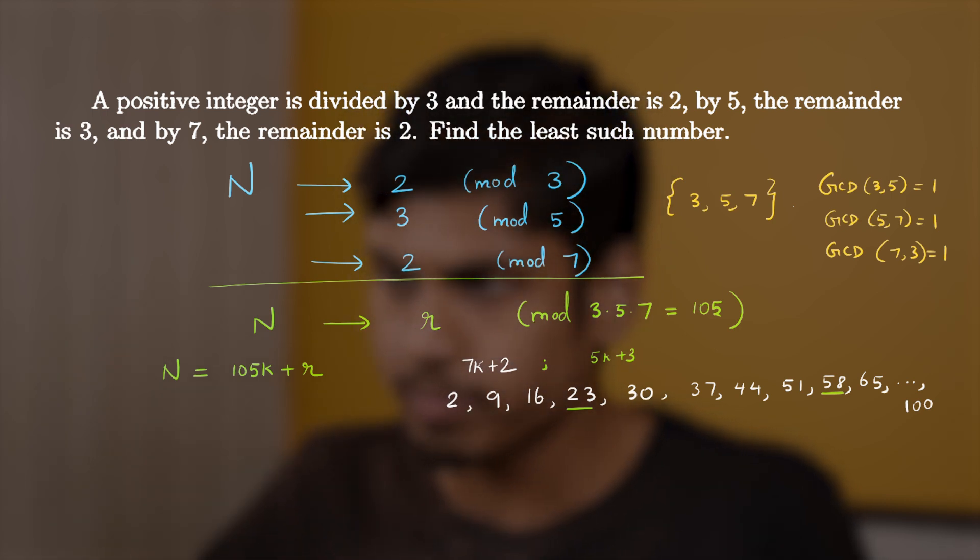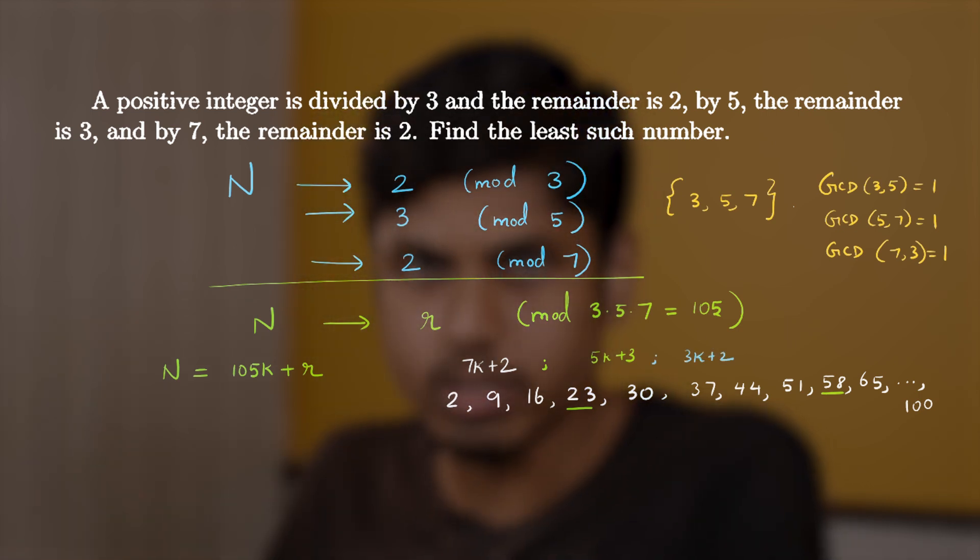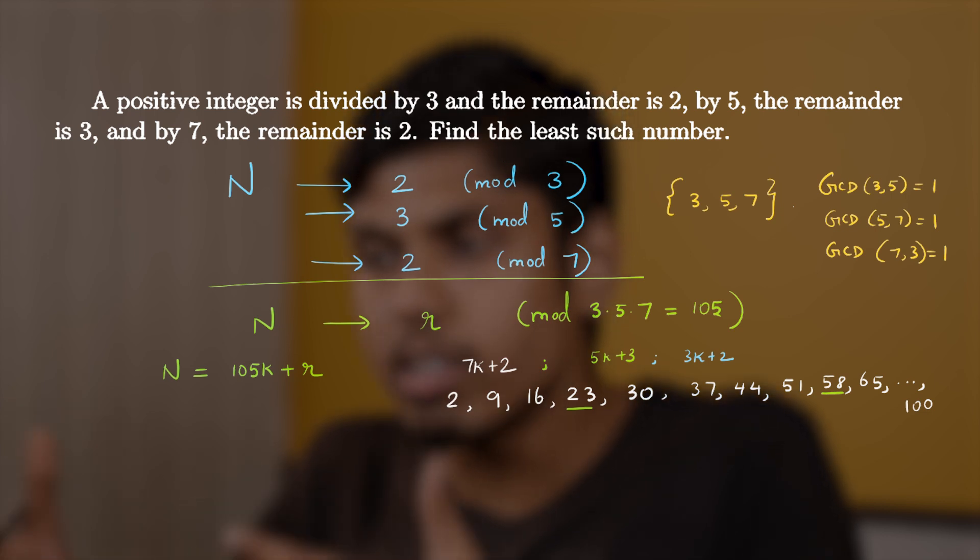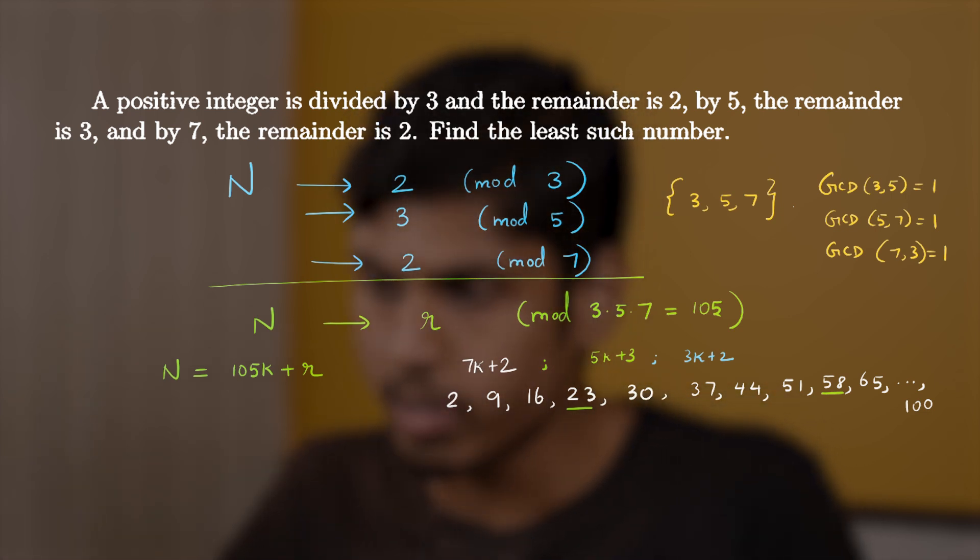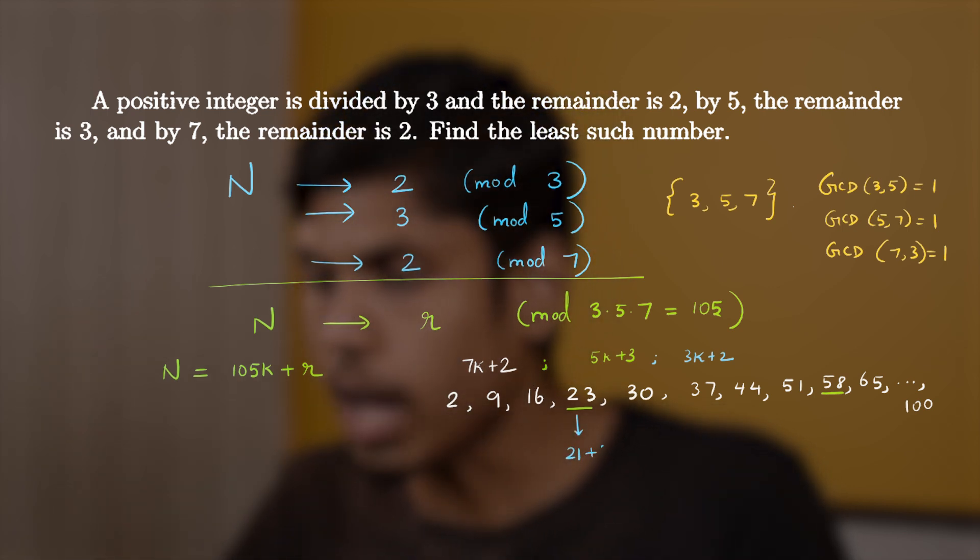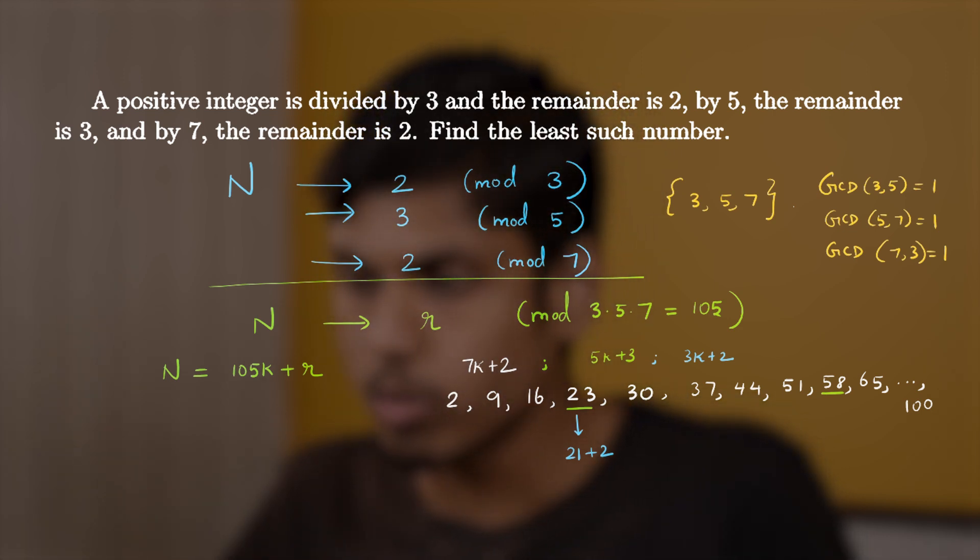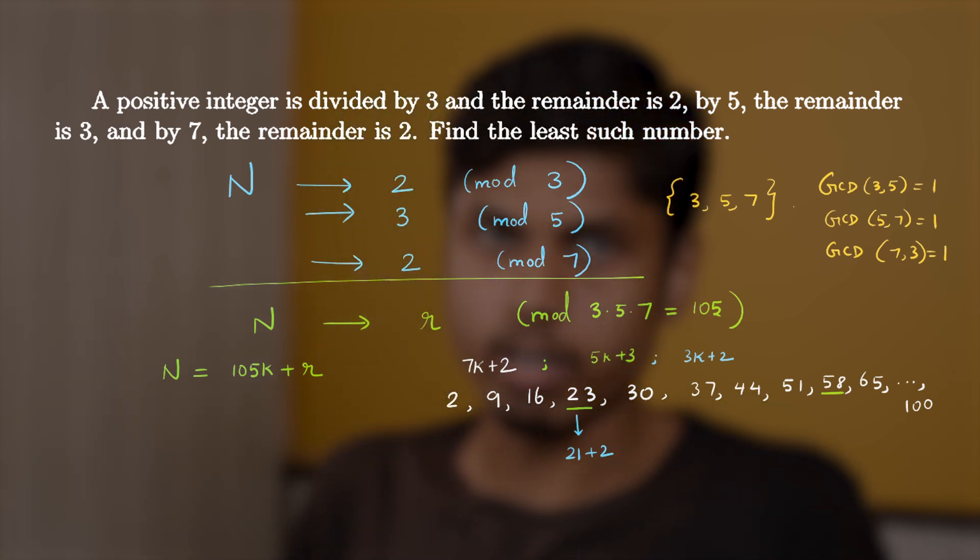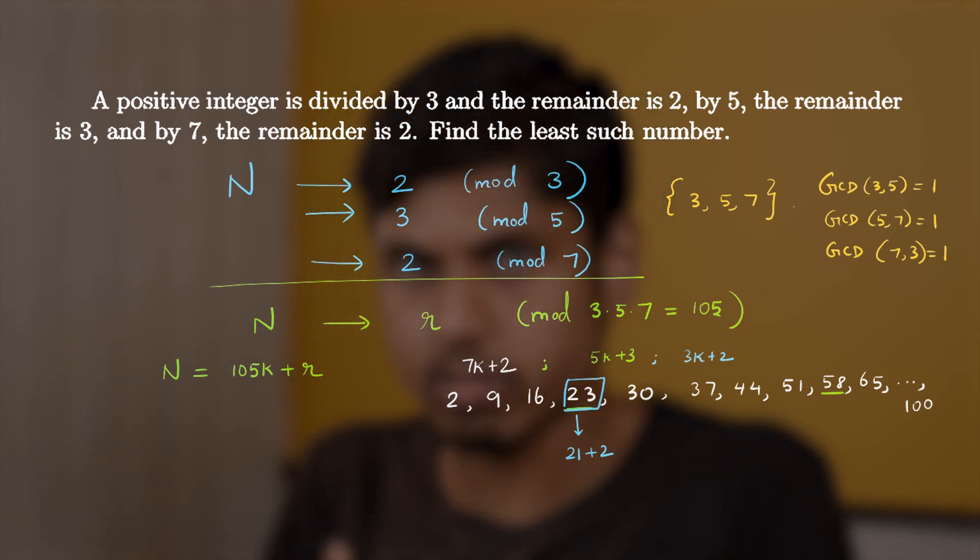And now the third condition states that it should be of the form 3k plus 2. So out of these selected numbers in the second step, further filter these numbers that are of the form 3k plus 2. So clearly 23 is of the form 3k plus 2, because 21 is a multiple of 3, and you add 2 to reach 23. So 2 is the remainder when divided by 3. Hence 23 clearly satisfies all 3 conditions.